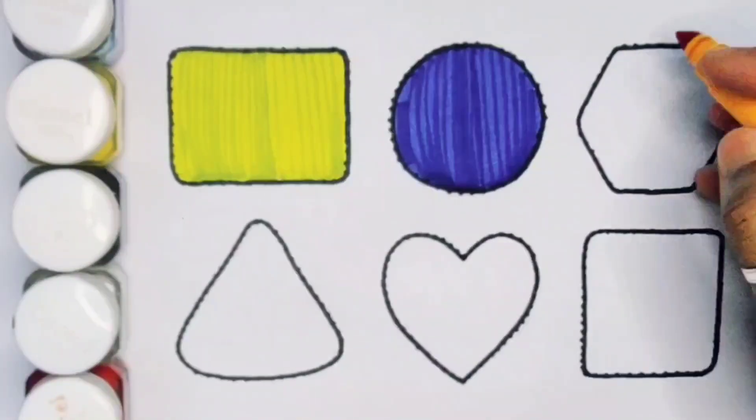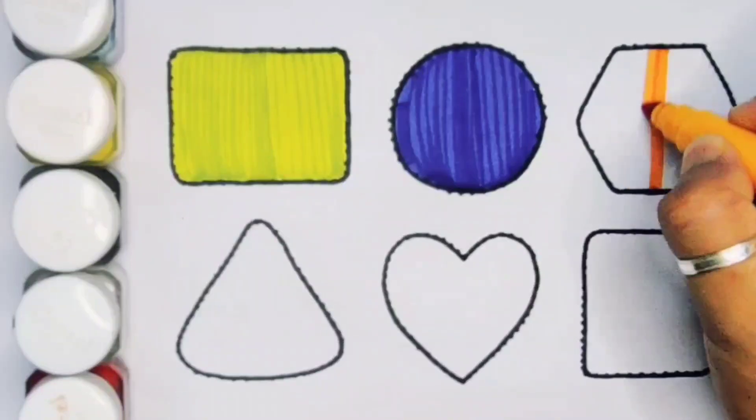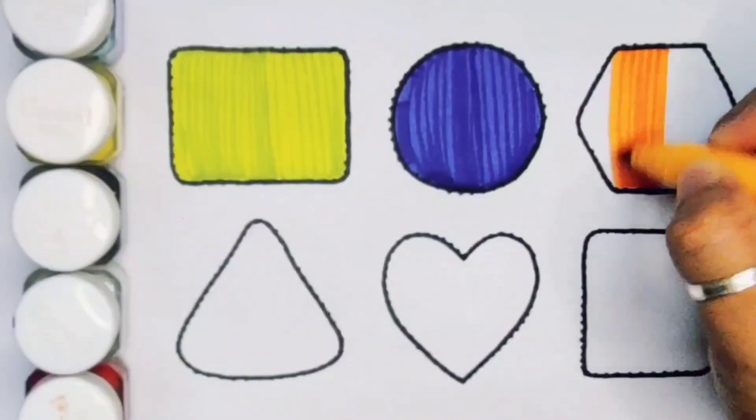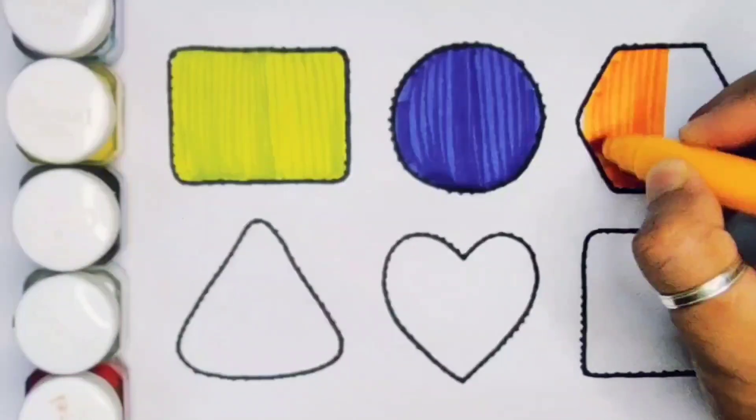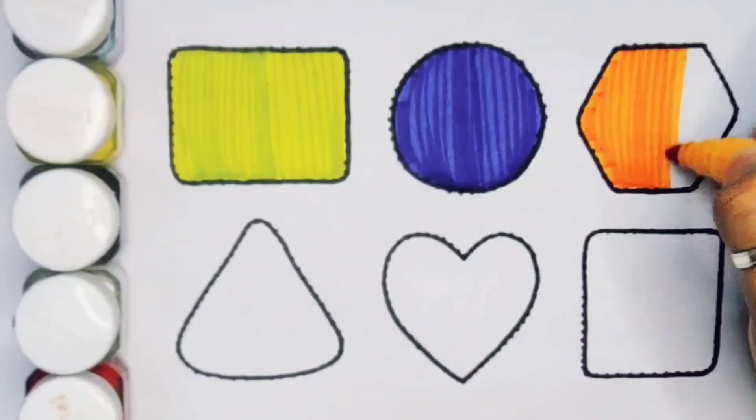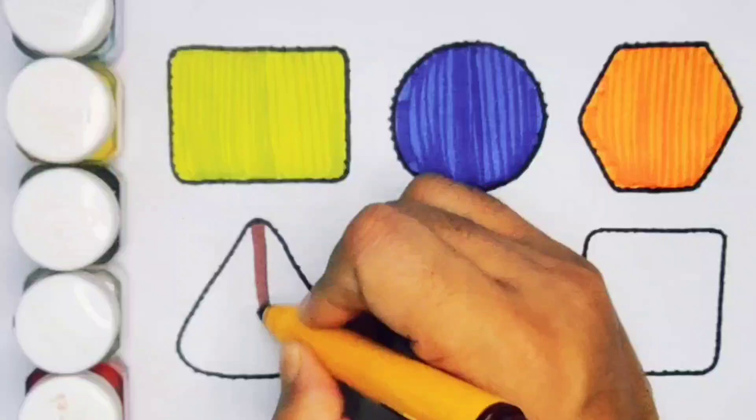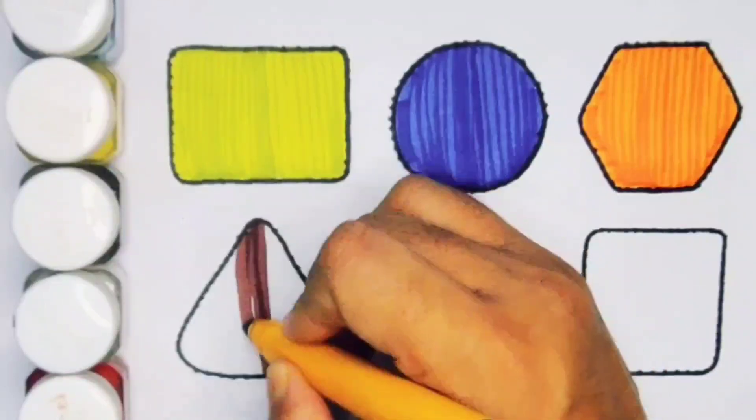Next, orange color hexagon. Next, chocolate color triangle.